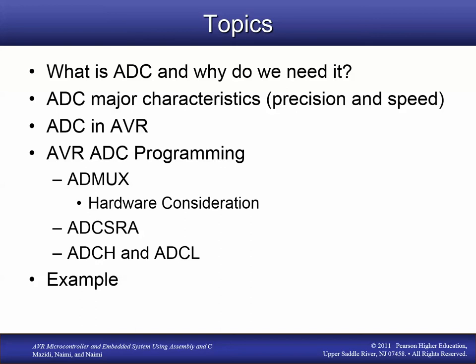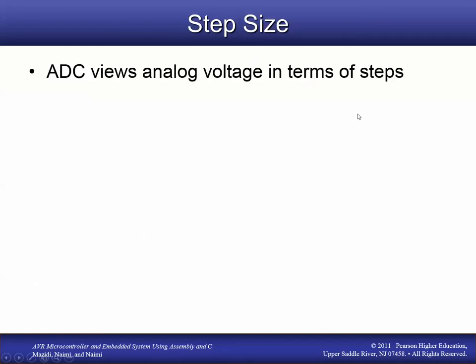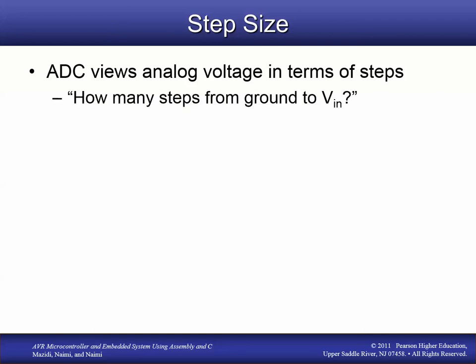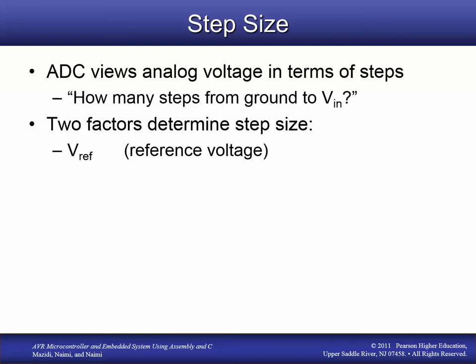There are a couple of main characteristics when talking about analog-to-digital converters: the precision of the conversion and the speed. The precision refers to the step size. The analog-to-digital converter views an analog voltage in terms of steps — how many steps are there from ground to the voltage being read, or VN? There are two factors that determine the step size. First is the reference voltage, called VREF. This is the voltage against which all input voltages are compared. For our microcontroller, the highest VREF value we can have is 5 volts.